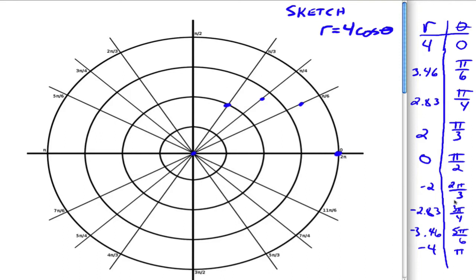Alright, and then at 2 pi over 3, we're at negative 2. So remember, we have to go back through. So 2 pi over 3, we're at negative 2, would be here. And then at 3 pi over 4, we're at negative 2.83. So 3 pi over 4 would be up here somewhere. And then at 5 pi over 6, we're at negative 3 and a half. So 1, 2, 3 and a half roughly. And at pi, we're over at negative 4, which puts us back here.